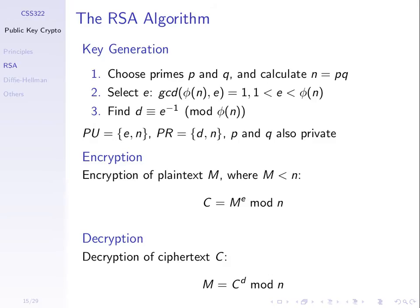To encrypt, if we have some message m treated as an integer, and m is less than n, we take m raised to the power of e and mod by n to get ciphertext c. To decrypt, we take the ciphertext raised to the power of d and mod by n and we get the original m back. Today we'll try to prove that we always get the original m back.